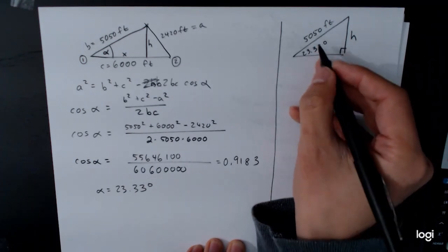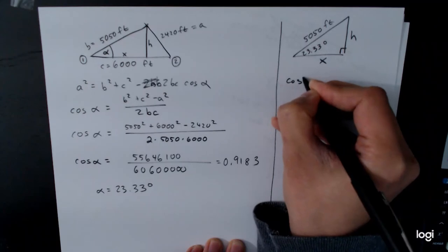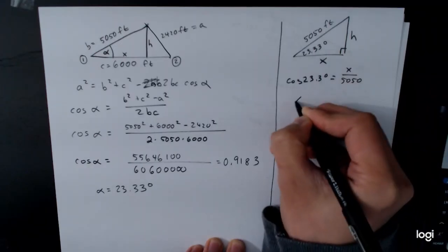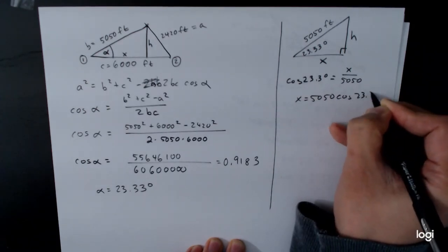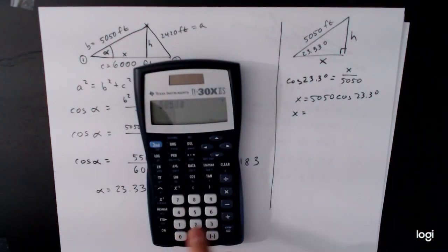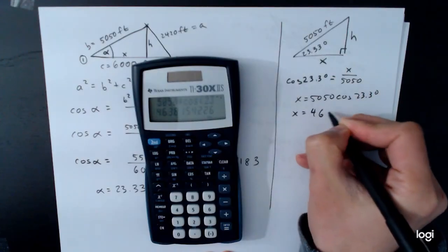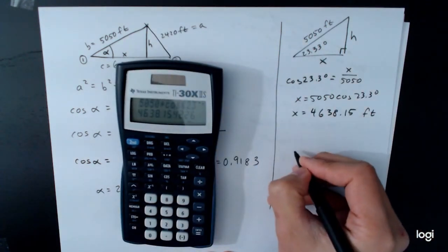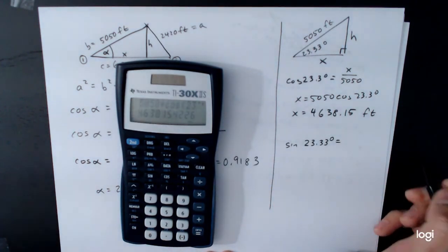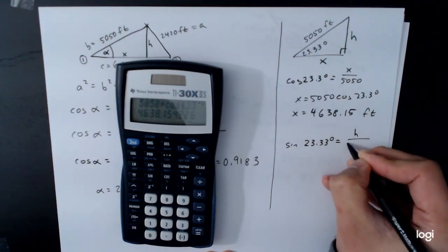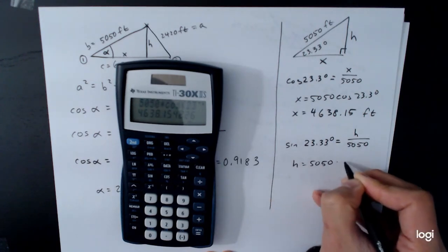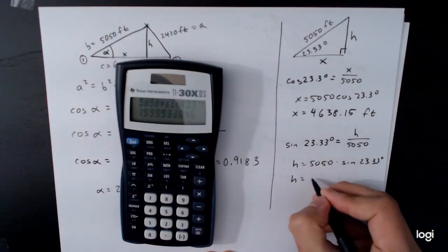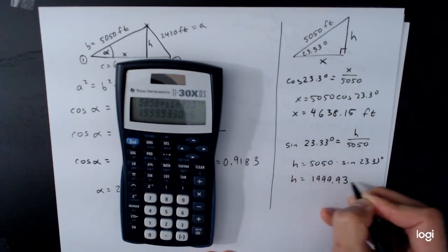And now we go back to previous trigonometry stuff. So if we want to solve for x, we can use cosine, cosine of 23.33 degrees. Cosine is adjacent over hypotenuse, x over 5050. So x is 5050 times cosine of 23.3 degrees. So x is equal to 5050 times cosine of 23.3, 4638.15, and that's in feet. And then the h value, we can get that one using the sine function, sine of 23.33 degrees. Sine is opposite over hypotenuse, h over 5050. And so h is equal to 5050 times sine of 23.33 degrees, 5050 times sine of 23.33 is equal to 1999.93 feet, basically 2000 feet.